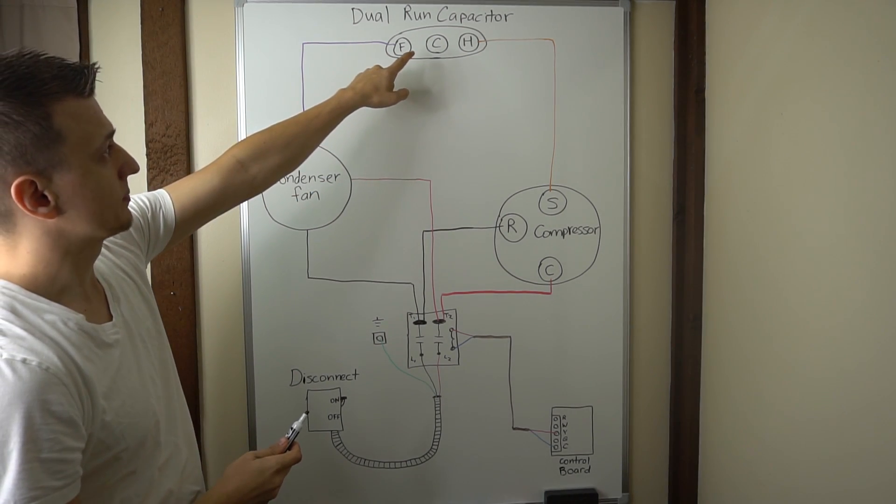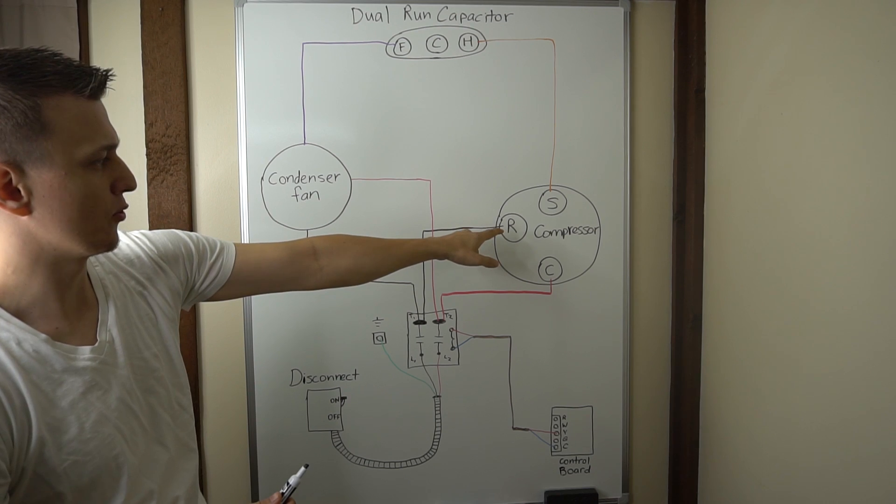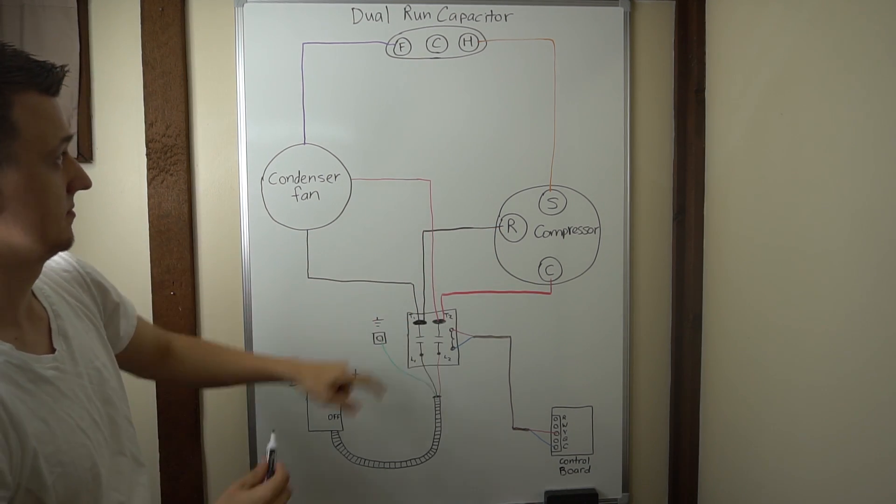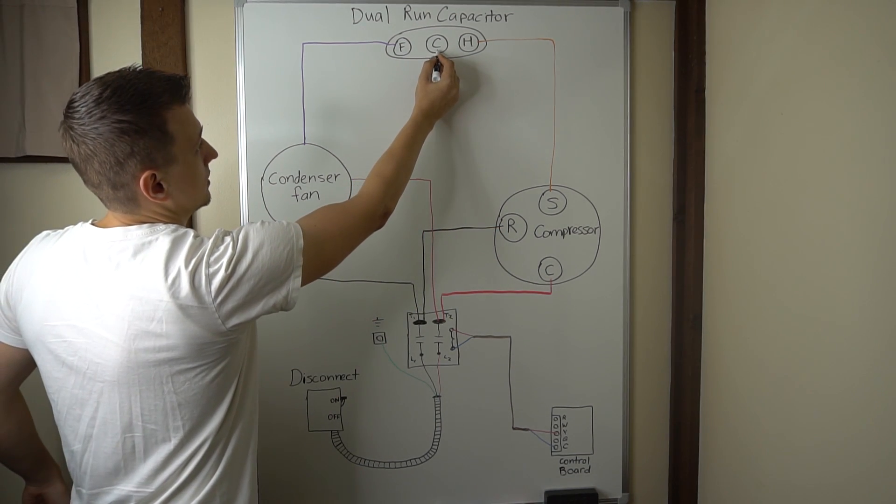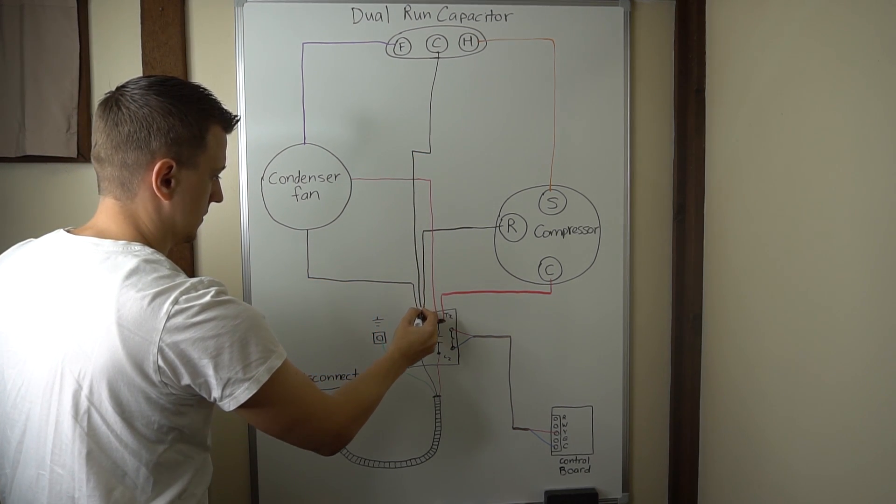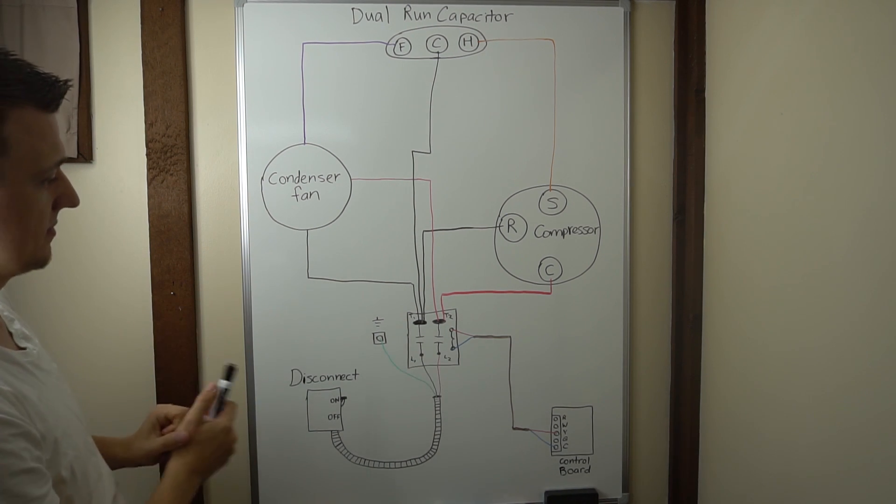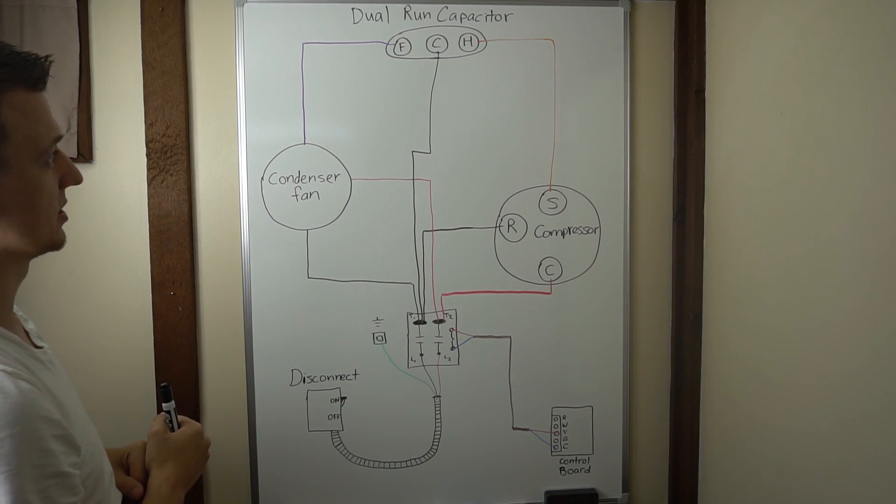And the common from the run capacitor will go to the same place as the wire coming from the run winding on the compressor. So it would look like this. There. With that wire there, now everything will work the way it should.